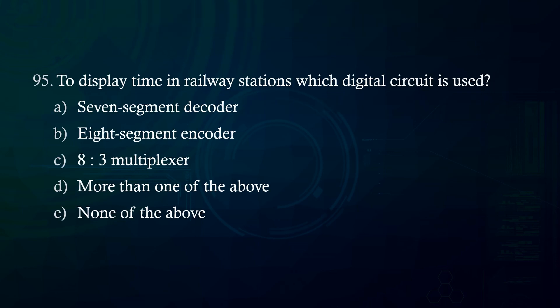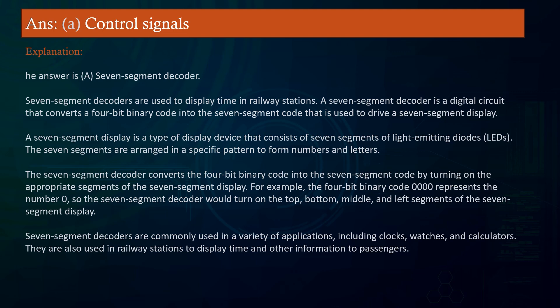To display time in railway stations, which digital circuit is used? A. 7-segment decoder. B. 8-segment encoder. C. A 3-multiplexer. D. More than one of the above. E. None of the above. Answer: 7-segment decoder. Explanation: A 7-segment decoder is a digital circuit that converts a 4-bit binary code into the 7-segment code used to drive a 7-segment display. A 7-segment display consists of 7 segments of LEDs arranged to form numbers and letters.